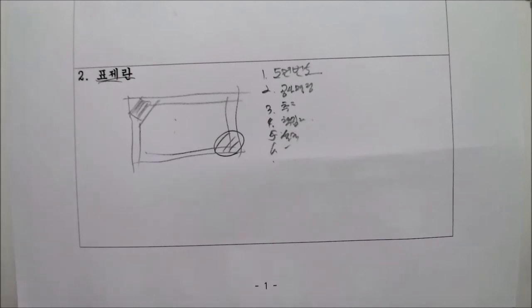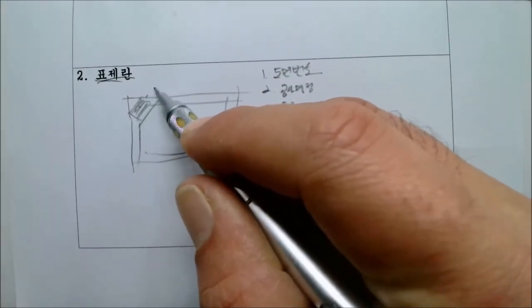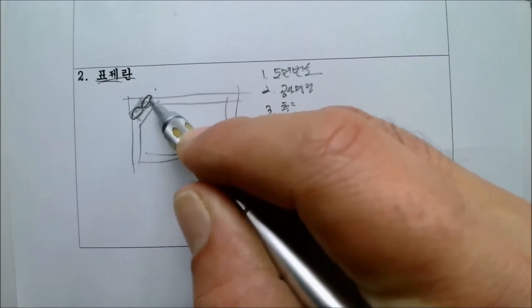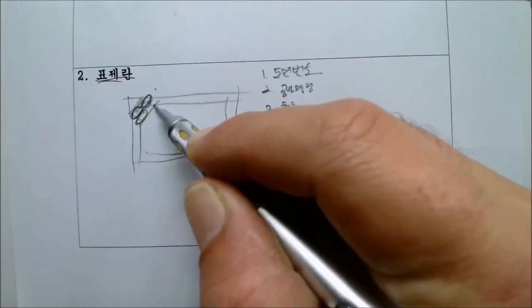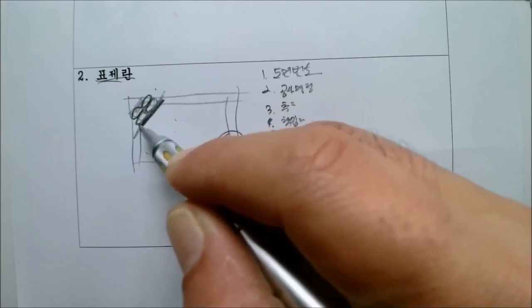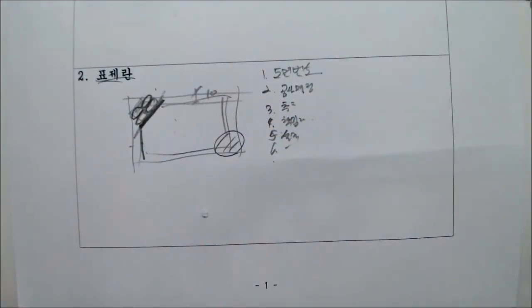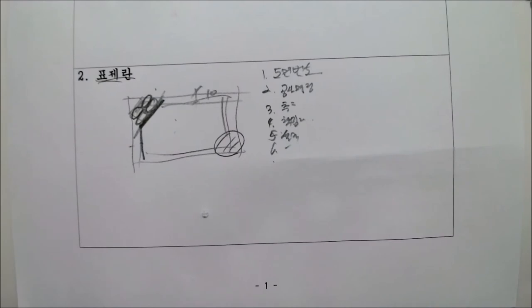무슨 말인지 아시겠죠? 본인이 직접 그리는 게 아니에요. 표제를 보시면, 종목 및 등급, 실내건축기능사, 수험자 번호, 성명, 연장시간, 감독 확인 이런 식으로 기재해요. 테두리는 10mm입니다. 지금까지 한 5분 정도 됐습니다.